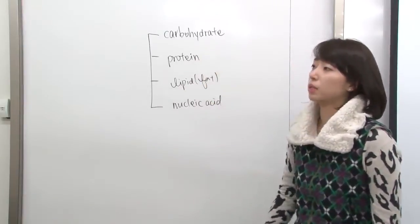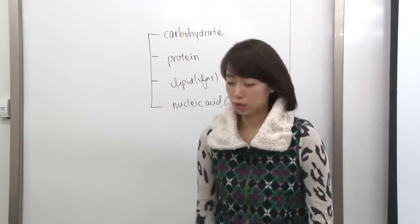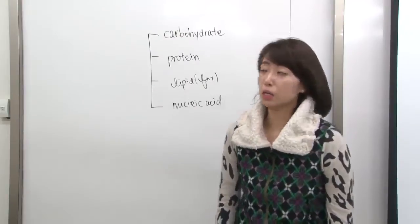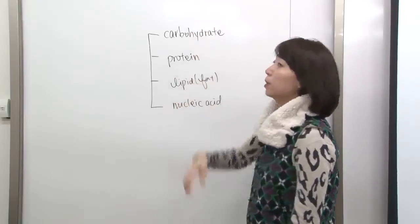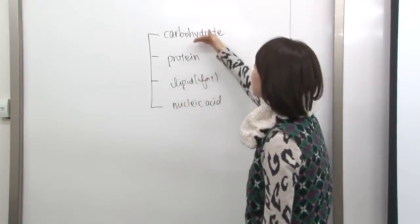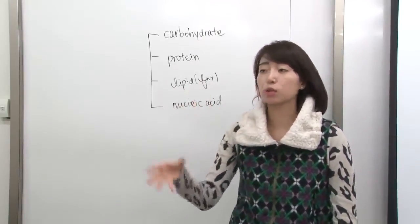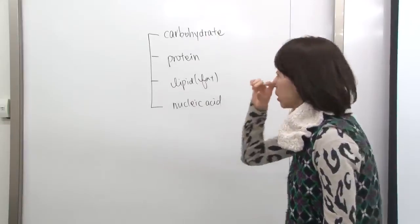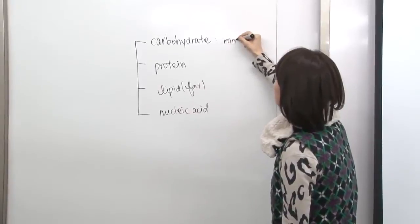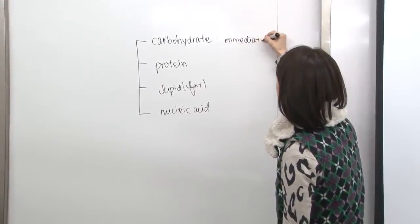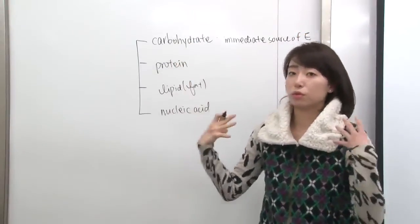Carbohydrate is basically an energy source. For example, rice contains mainly carbohydrates. When you take them in, they get broken down into smaller molecules that participate in cellular respiration later. So carbohydrates generate energy — they are like an immediate source of energy from food.